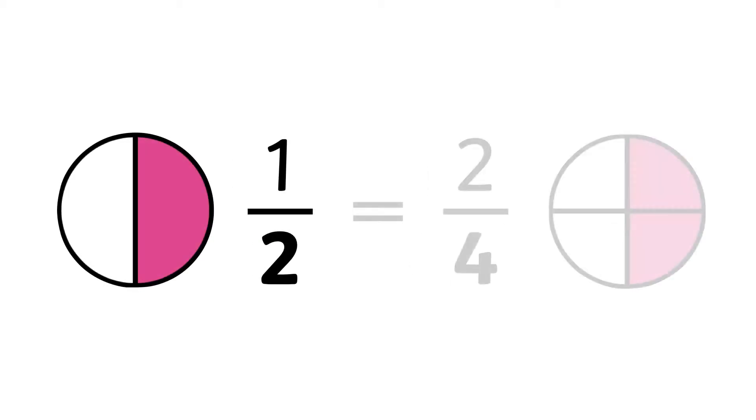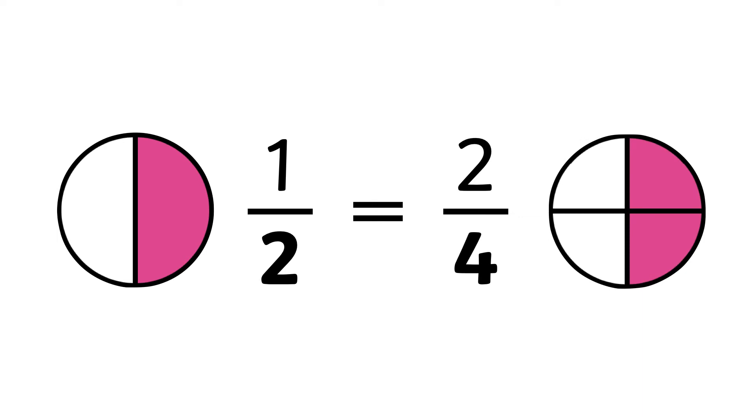We can see that one half is equivalent to two quarters in this pictorial representation but also if we multiply the denominator by 2 to reach 4 we must repeat this with the numerator to ensure the fraction stays the same value just like in this picture. Either way we reach two quarters.